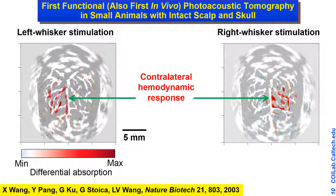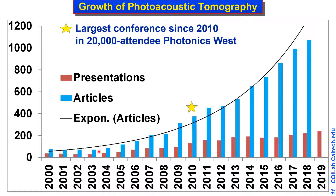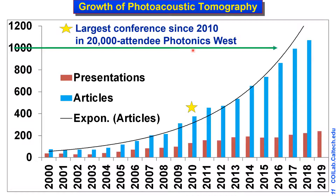In 2003 we acquired the first functional photoacoustic tomographic image of a mouse brain. By wiggling one side of the whiskers, the contralateral side of the brain was activated, and we could see brain activation on either side — very similar to BOLD MRI. The publication of this paper activated exponential growth of our field. After 2010, the conference on photoacoustics became the largest at the 20,000-attendee Photonics West, and is now the largest by far.